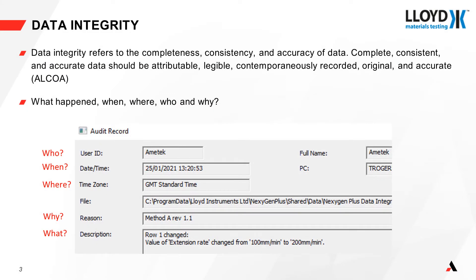Data integrity refers to the completeness, consistency, and accuracy of data. It enables us to reliably know what happened, when it happened, where it happened, who made the changes, and also why they made the change.